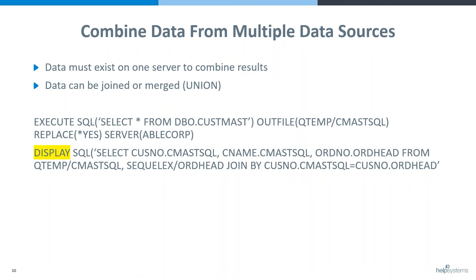My first execute statement in the script goes out to that SQL server database — in my case it's named AbleCorp — so I just fill in that server parameter on the execute command. I'm using a quick SQL statement to select all the fields and all the records from the customer file over there, and I bring them back locally to the IBMI into an outfile in Qtemp that I create. I can then use that file in my script.